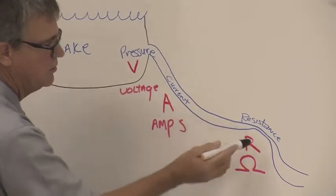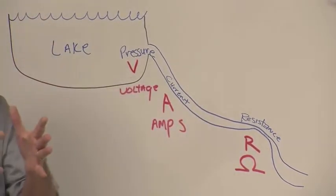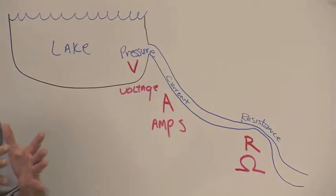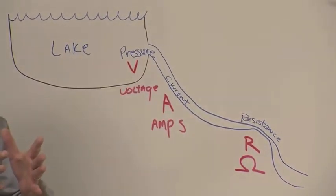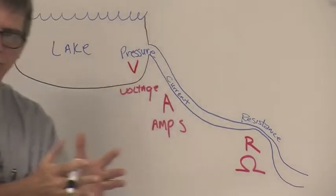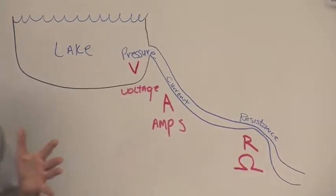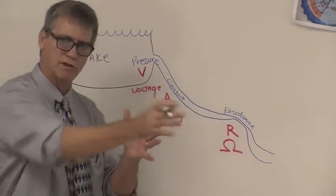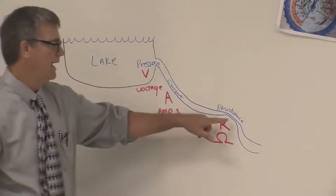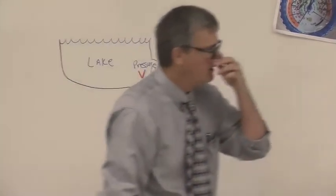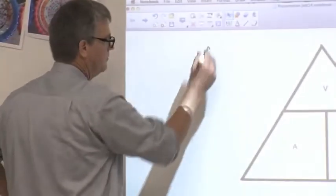And if it gets into a restricted space in a creek or a stream, we would consider that resistance. That resistance is trying to hold that water back, right, and so it's forcing through that resistance. And in electricity, if you all know Ohm's Law...